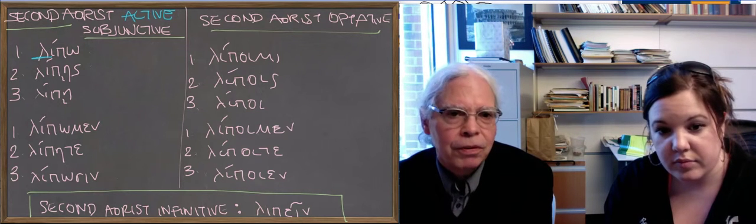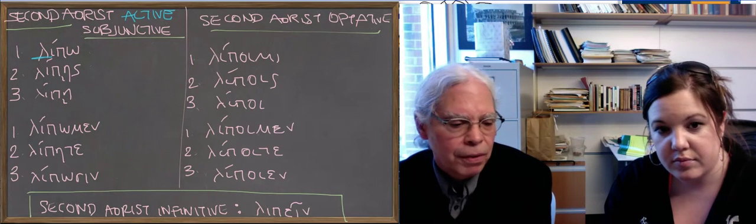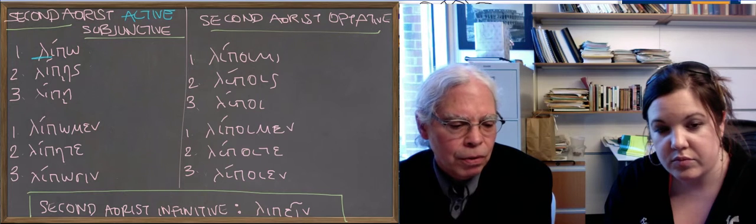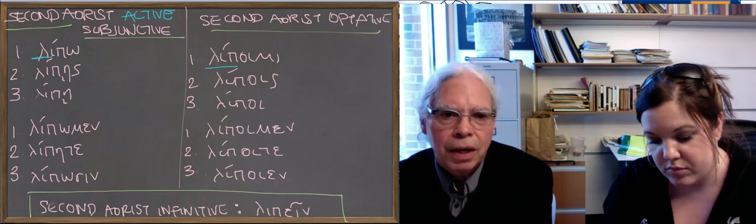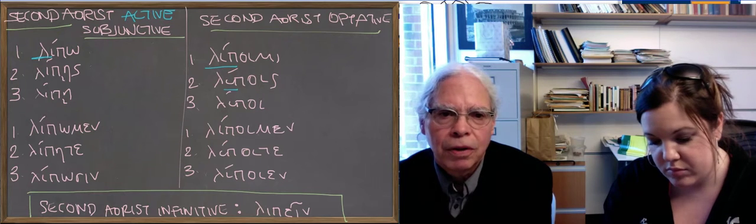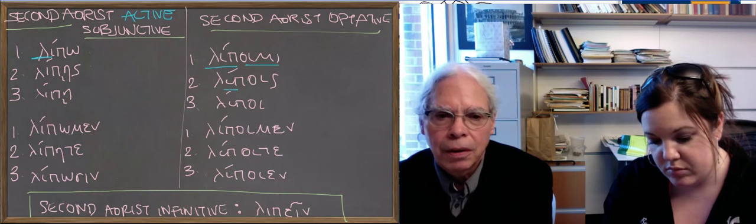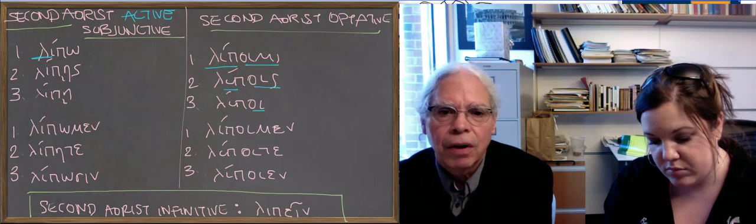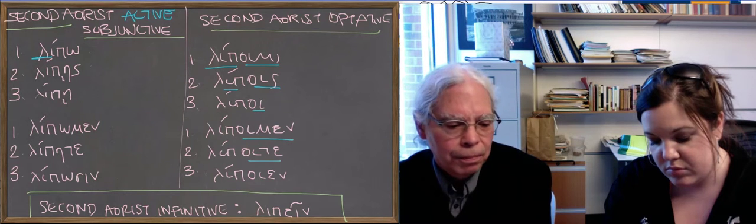In the optative, you remember in the optative, the thematic vowel is always o, so you've got lip plus o, plus the iota, that's the sign of the optative, plus the same endings as you have in the active optative, present.